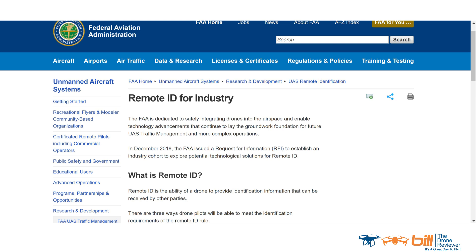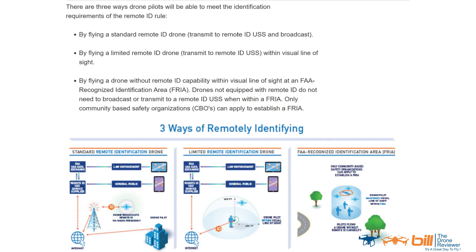Remote ID is the ability of a drone to provide identification information that can be received by other parties. There are three ways drone pilots will be able to meet the identification requirements of the Remote ID rule: by flying a standard Remote ID drone — transmit to Remote ID USS and broadcast; by flying a limited Remote ID drone — transmit to Remote ID USS within visual line of sight; and by flying a drone without Remote ID capability within visual line of sight in an FAA-recognized identification area.